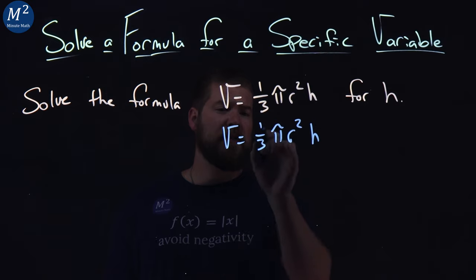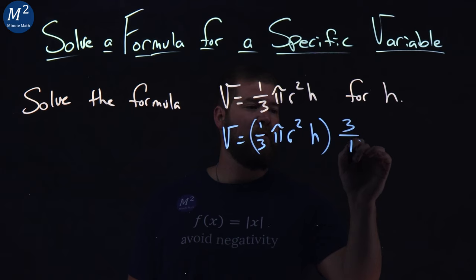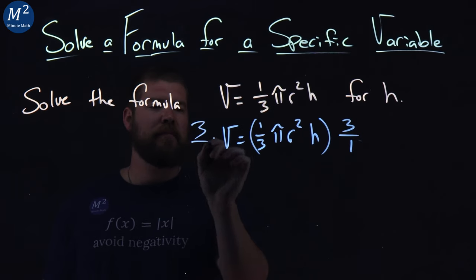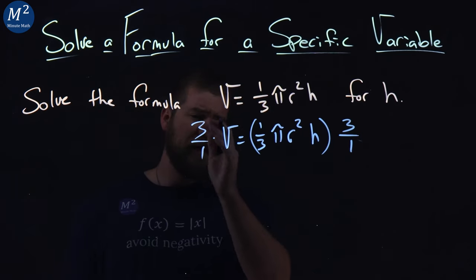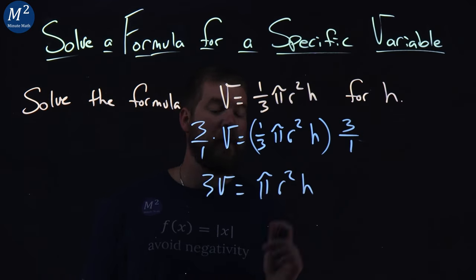So what I'm first going to do is, I see a one-third, so to counteract that, I'll multiply both sides by three over one. What does that leave us with? Well, on the left side, 3v is now equal to πr²h.